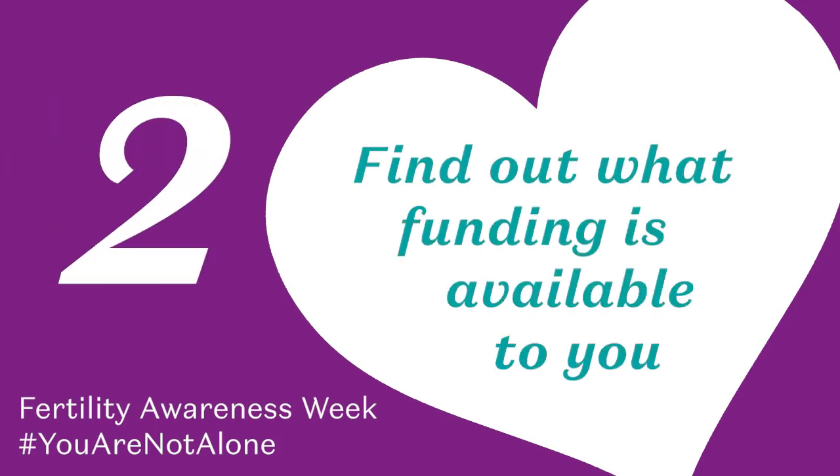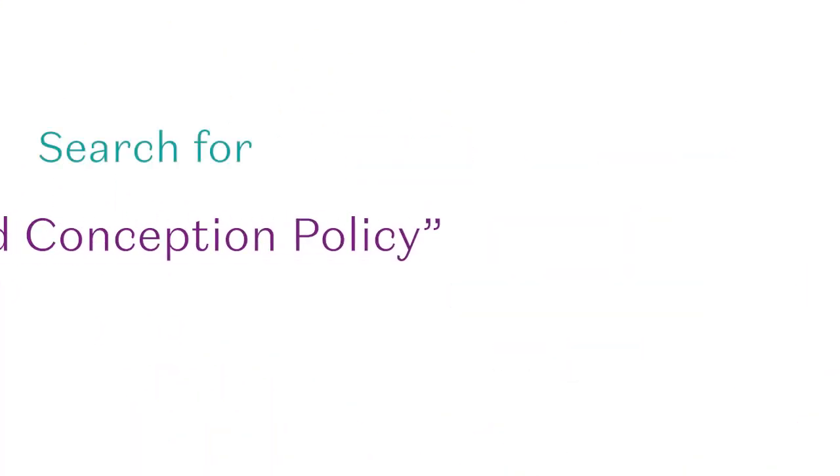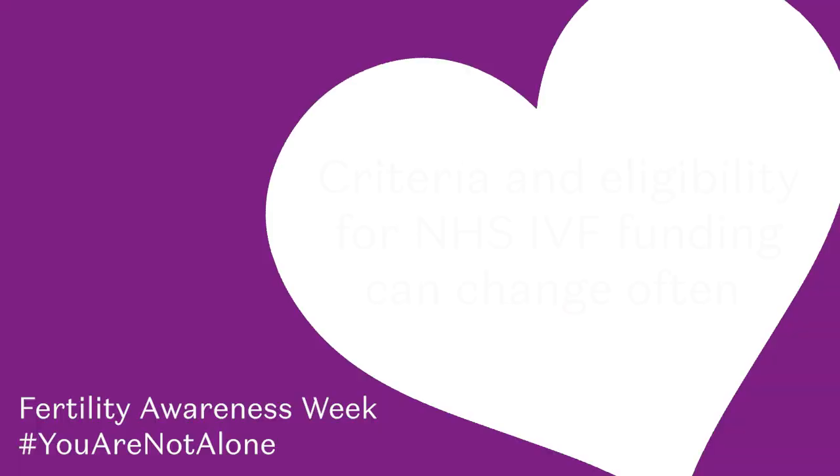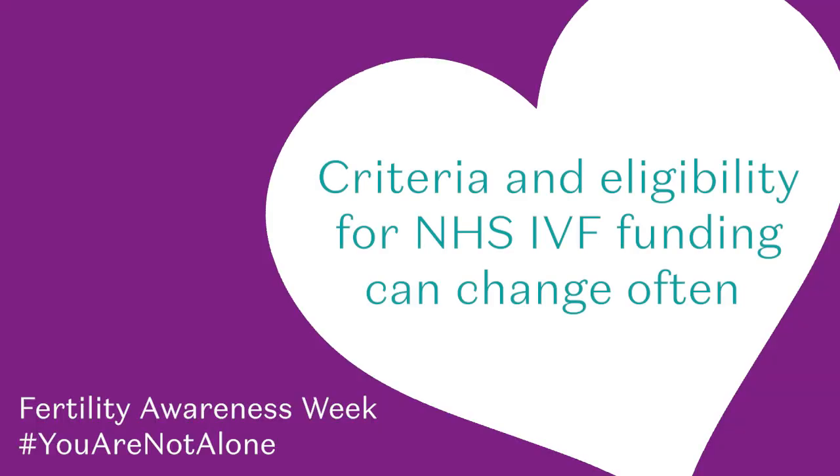Step two: find out what funding is available to you. Now you know the name of your CCG, search for its assisted conception policy. You should be able to find this online and it will explain the exact details of what funding is available in your area and how to apply for it. The CCG criteria for NHS funding can change quite often, so it's important you have the most up-to-date information. If you aren't sure, speak with your NHS liaison manager at the fertility clinic where you wish to have treatment and they should be able to advise you.